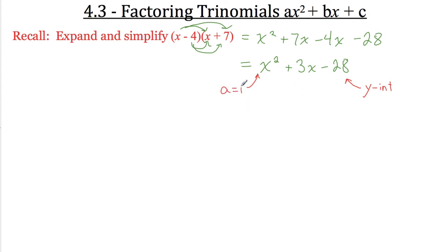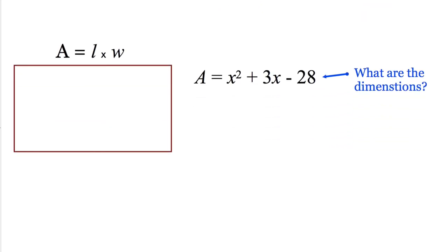What's actually important about today's lesson is going in the reverse direction. In this case, we went from factored to standard, but what if we wanted to go the other way around? What if all I gave you was x squared plus 3x minus 28? And why would we even bother doing that? Let's take a look at a rectangle. The area of any rectangle in the world is length times width. If I told you that the area of this rectangle was x squared plus 3x minus 28, and I asked you what are the dimensions — the length and the width — at this point in the game, you might have absolutely no idea because you don't know how to factor this trinomial.